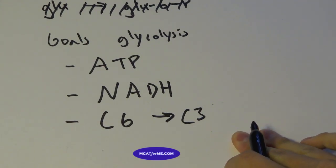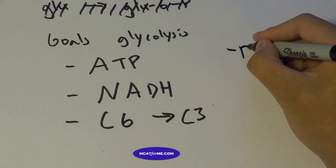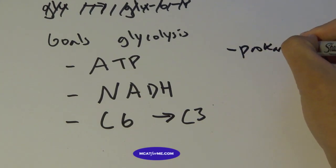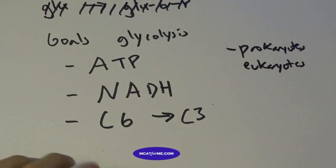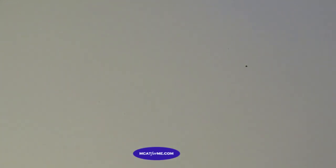But who does glycolysis exactly? Prokaryotes, eukaryotes, everybody does glycolysis. That's the one thing that the MCAT would like to test is that glycolysis is the most ancient form of metabolism. So prokaryotes, eukaryotes, everybody will do it regardless of who you are.